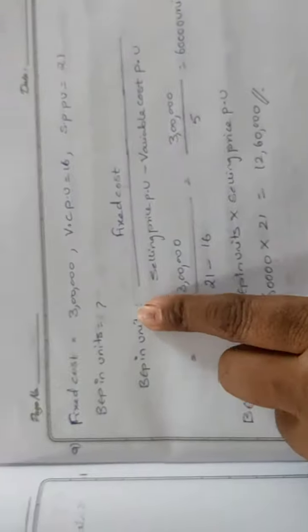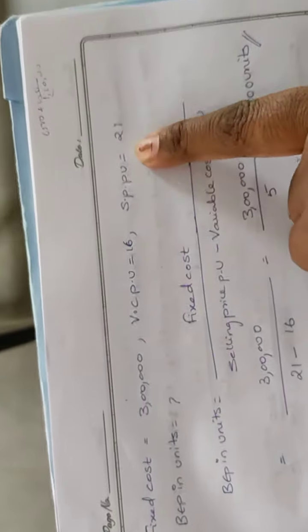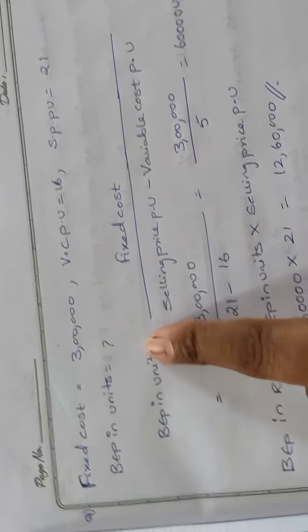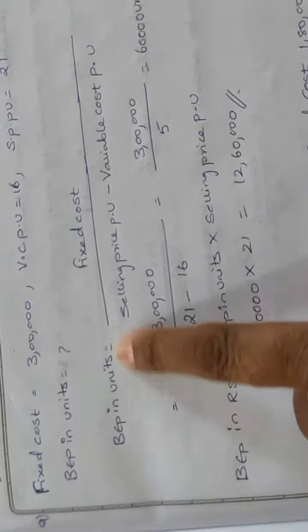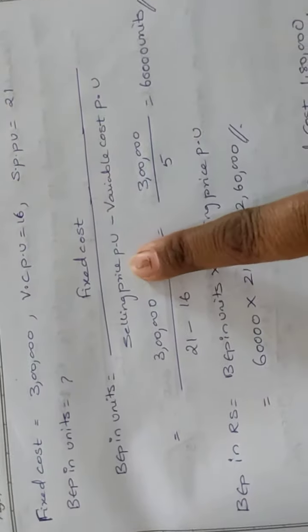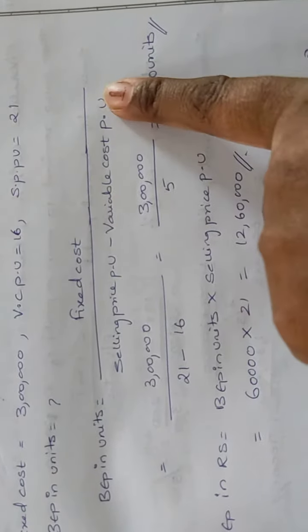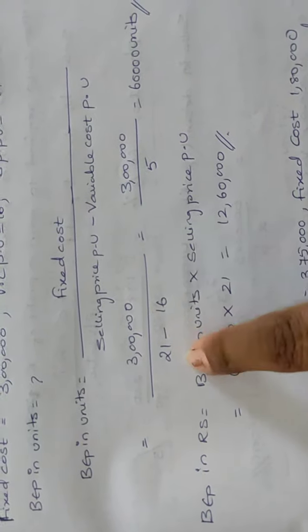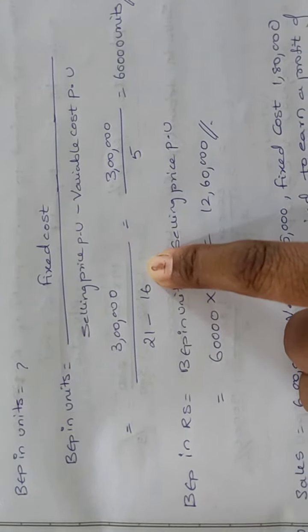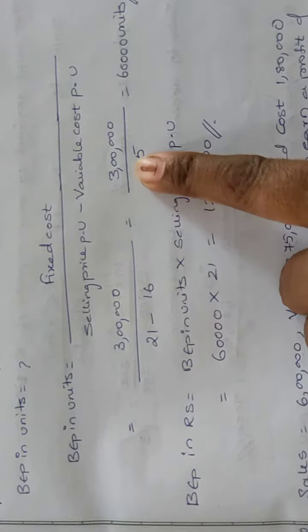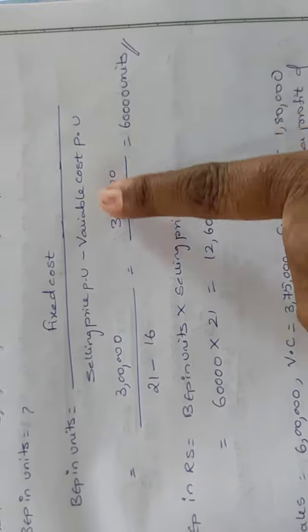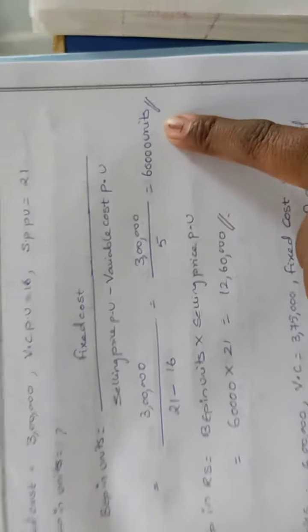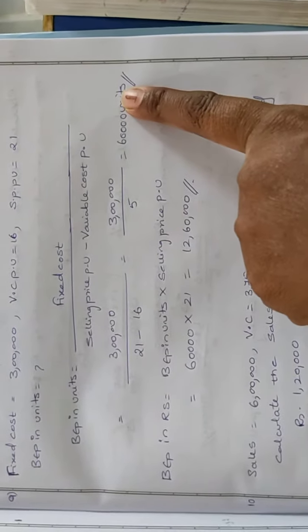So what are the BEP units? Fixed cost is there, VC is there, selling price per unit is there — we have to find BEP in units. BEP in units = Fixed Cost ÷ (Selling Price per unit − Variable Cost per unit). So fixed cost is 3 lakhs. 3 lakhs divided by (21 − 16) = 3 lakhs divided by 5 = 60,000 units.